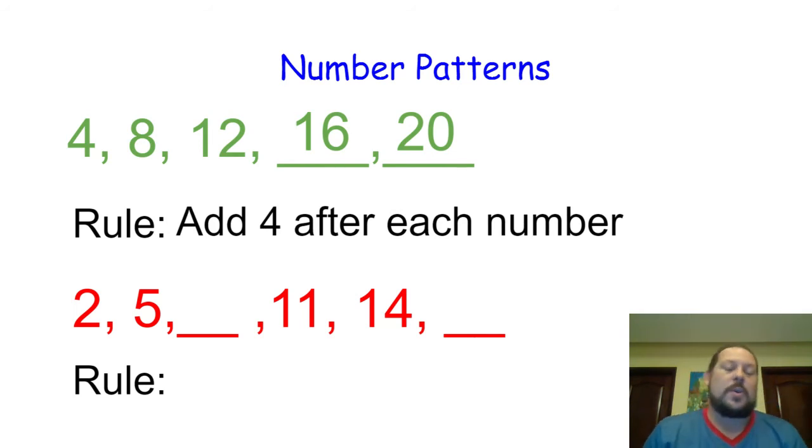Let's try another one. We have two, five, a blank, eleven, fourteen, a blank. I'm thinking I might know what the answer is. What about you? Eight and seventeen. Very good. And what is the rule? Excellent. Yes. We add three after each number.